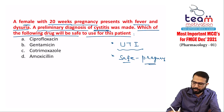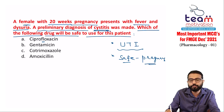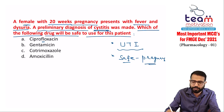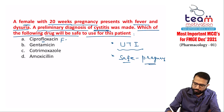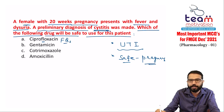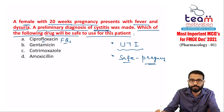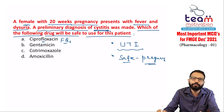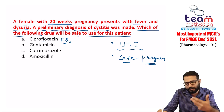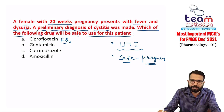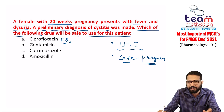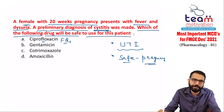Options include ciprofloxacin (a fluoroquinolone — one of the best drugs for UTI empirical therapy), gentamicin (an aminoglycoside, also effective for UTI), cotrimoxazole (sulfamethoxazole plus trimethoprim — good combination for UTI), and amoxicillin (an aminopenicillin). All these drugs have activity against the bacteria causing UTI, but we must also consider safety in pregnancy.